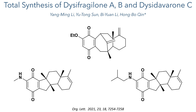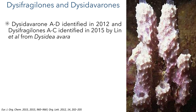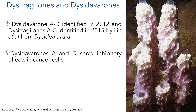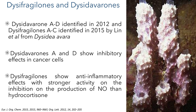This synthesis was published by the group of Hongbo-Quinn in Org. Lett. in August of 2021. Dissi-Darverons A to D were first identified in 2012 and Dissi-Fragalons A to C were identified in 2015 by Lin et al. from the South China Sea sponge Dissidea avara. Dissi-Darverons A and D both show inhibitory effects in cancer cells, while Dissi-Fragalons show anti-inflammatory effects with stronger activity on the inhibition of the production of NO than hydrocortisone. This makes these families of compounds interesting targets for organic synthesis, with the aim of exploring and optimising these biological effects.